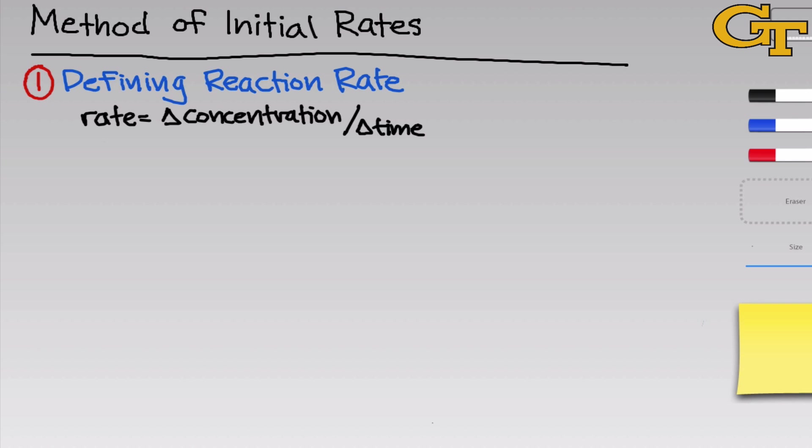We define the rate of a chemical reaction as the change in concentration of a reactant or a product per change in time. So if, for example, we follow the concentration of a reaction over time, here I've got the product concentration in brackets as a molarity and time on the x-axis, then we can define the average rate as the change in concentration per change in time between these two points. This would be what we would call an average rate.